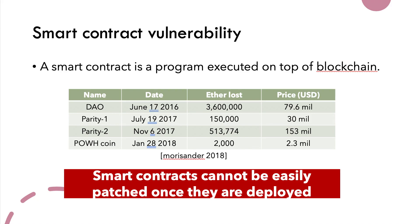Smart contracts are programs executed on top of the Ethereum blockchain. Because smart contracts often hold valuable digital assets, they become a good target for hackers. The table here shows four well-known hacks in the past, where the DAO hack is the most infamous one — hackers stole about 3.6 million Ether, equivalent to around 80 million USD at that time.